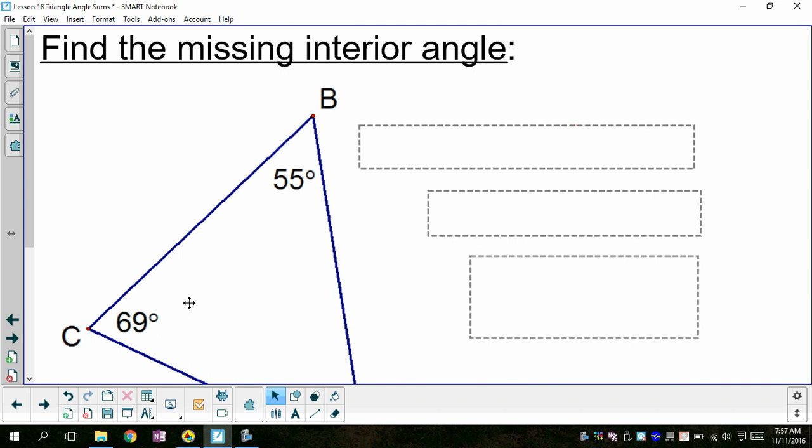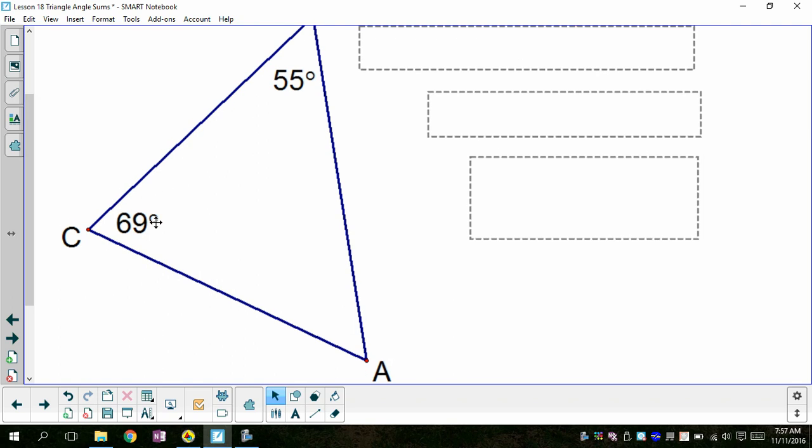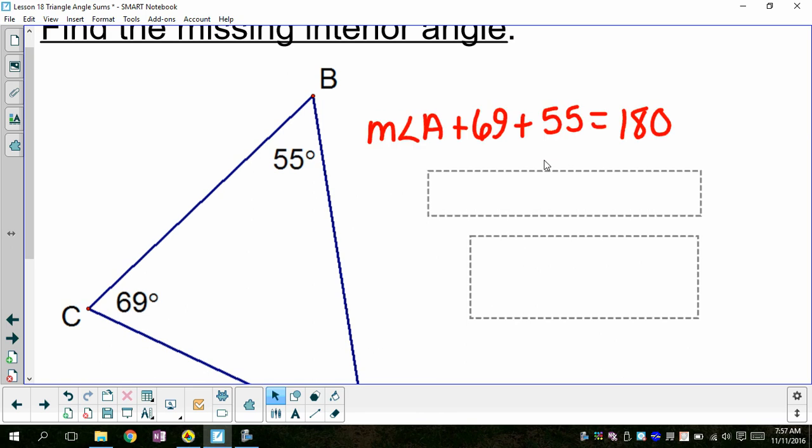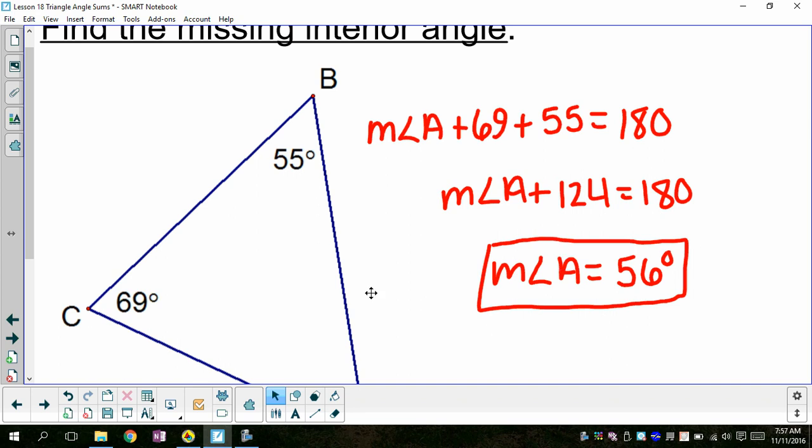So we can use that knowledge to find a missing angle inside of a triangle. Obviously, we're going to use a little algebra with this. So I have triangle ABC here. Angle C is 69 degrees. Angle B is 55. And I want to find angle A. So I can just set up an equation here that says angle A plus the other two is equal to 180. And I can do a little bit of algebra and solve to find that this third angle is 56 degrees.